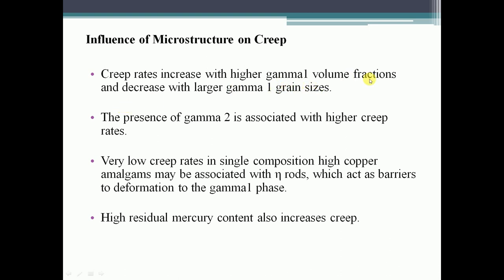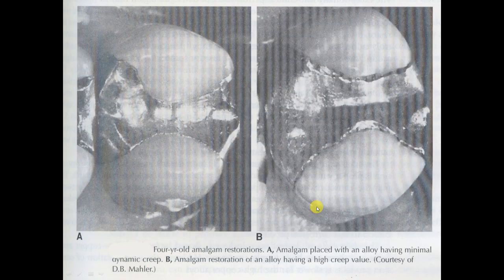Creep rate decreases with the volume fraction. The presence of gamma 2 is associated with a higher creep rate. In single composition high copper amalgam, certain elements act as barriers to deformation of the gamma 1 phase. High residual mercury content also increases creep.